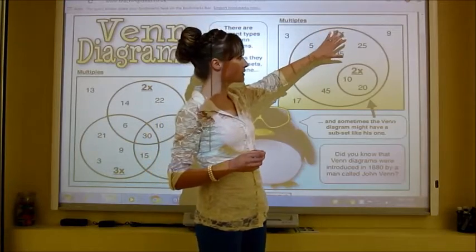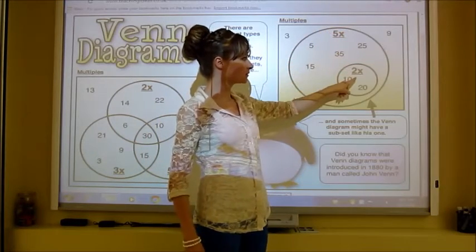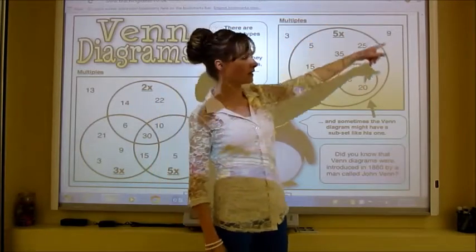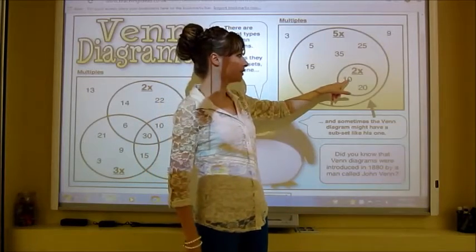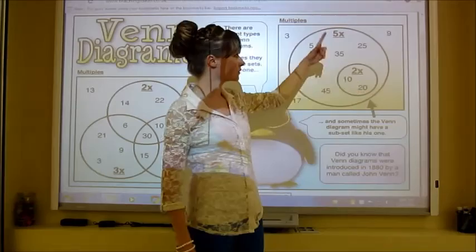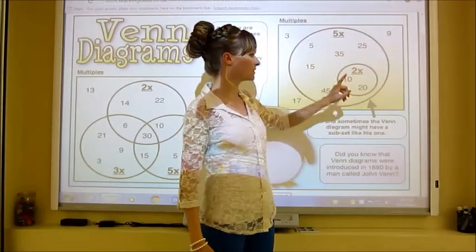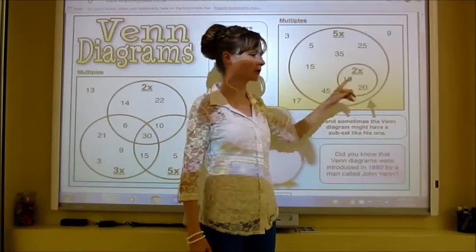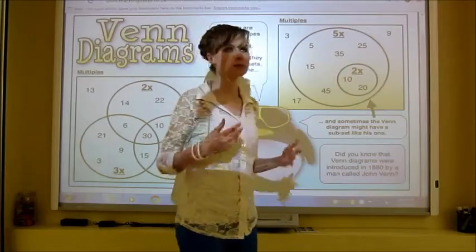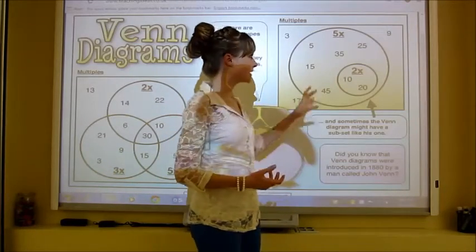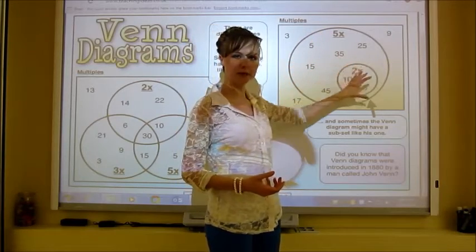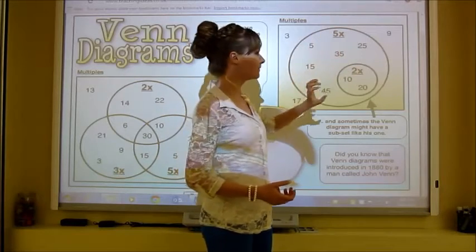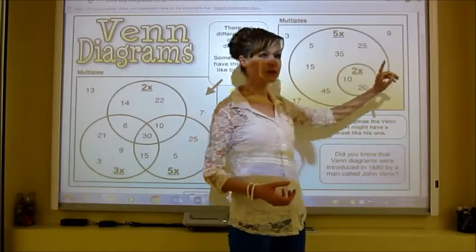Things that are multiples of 5 go in the outer circle. Things that are multiples of both 2 and 5 go in the inner circle. Things that don't fit either category go on the outside. For example, 10 is 2 times 5 and also 5 times 2, so it fits in the inner circle — same with 20. It has to fit both categories to go in the inner circle; if it only fits one, it goes elsewhere.